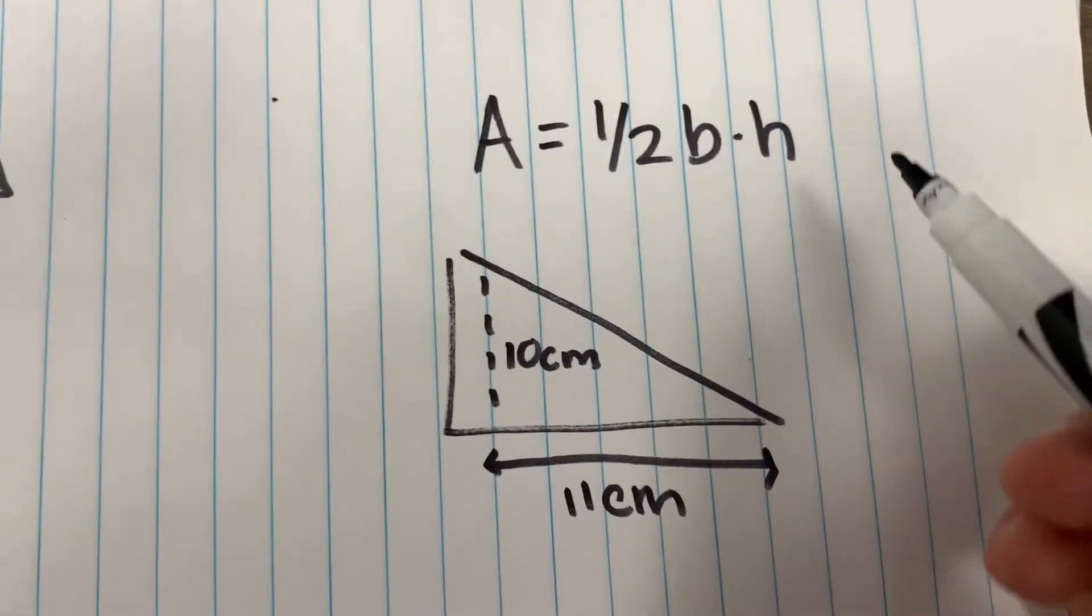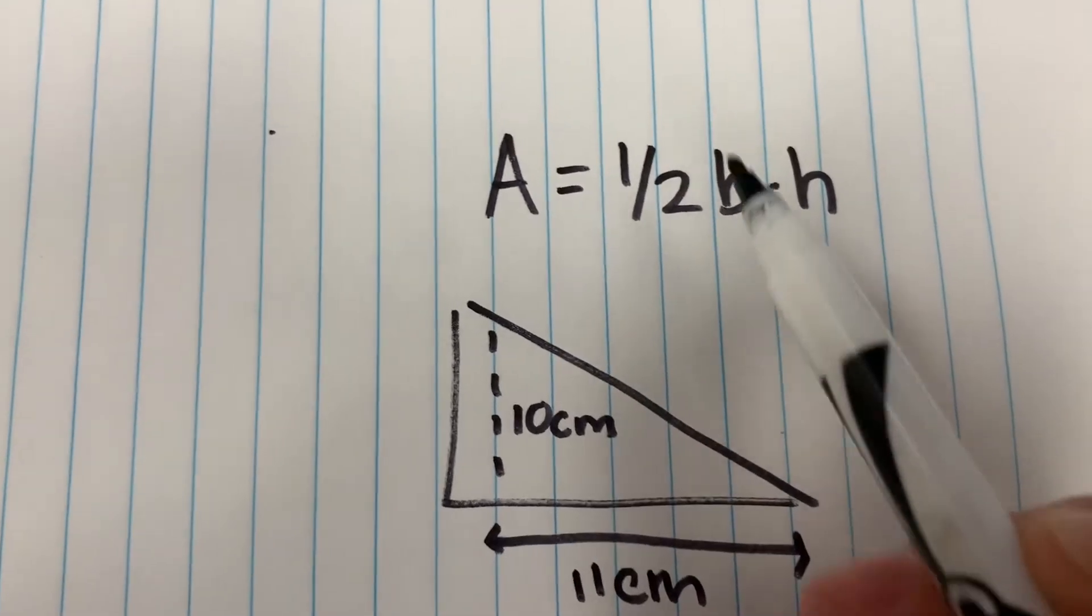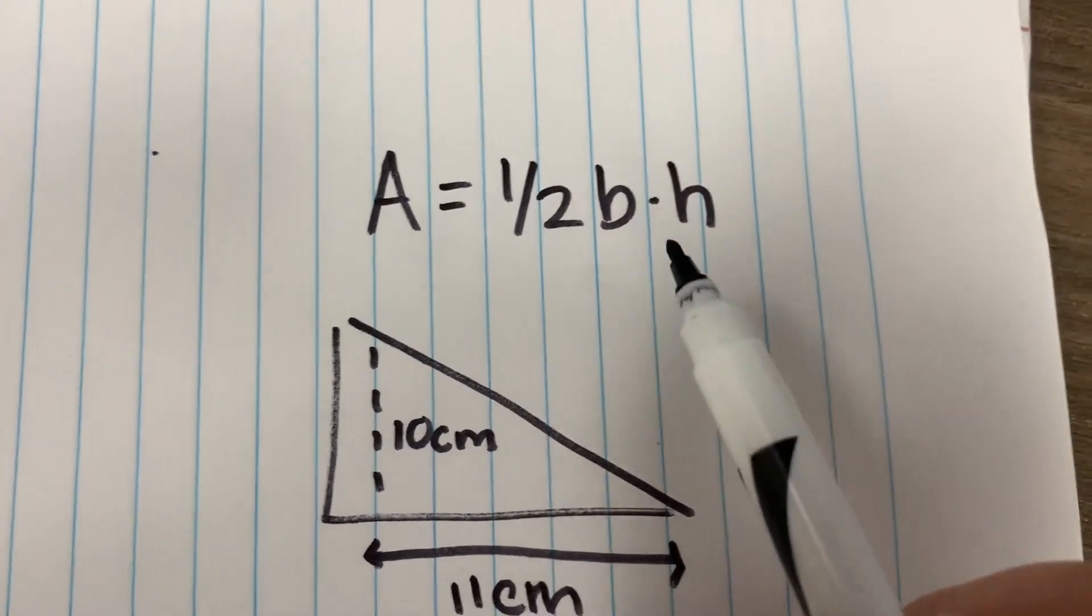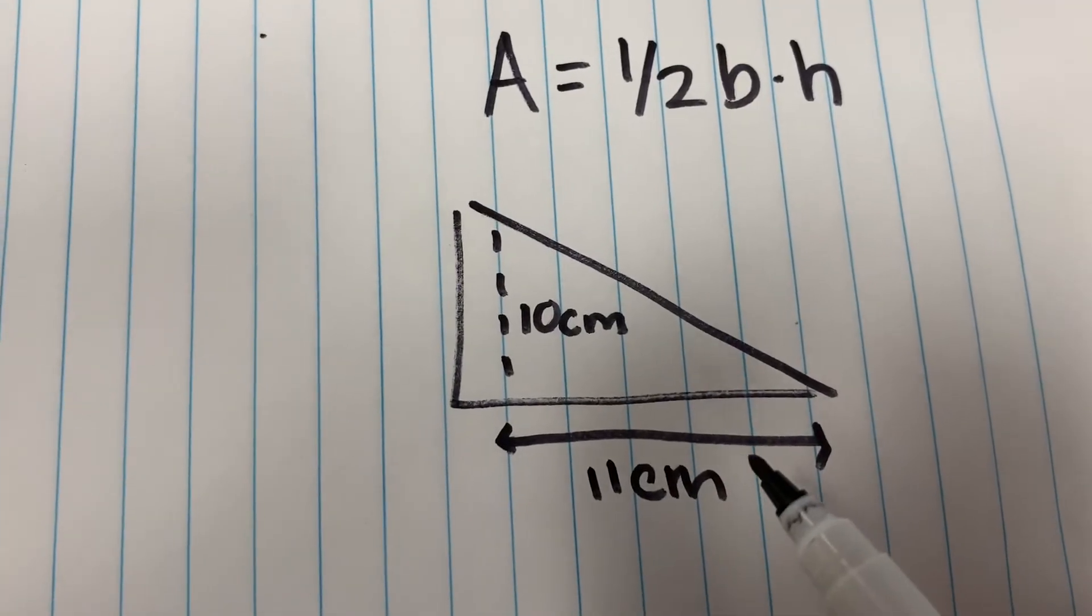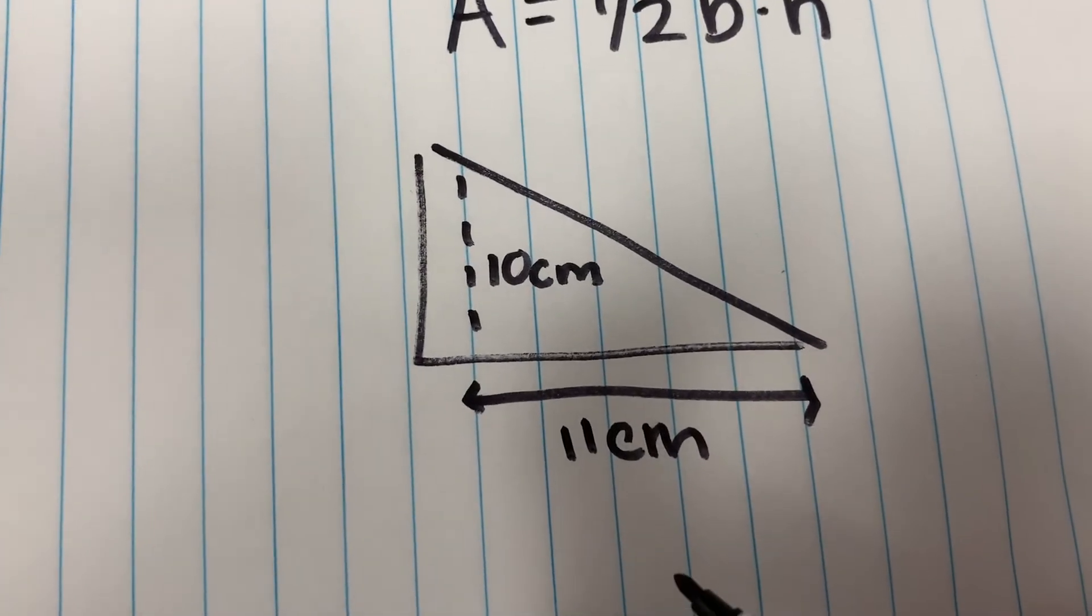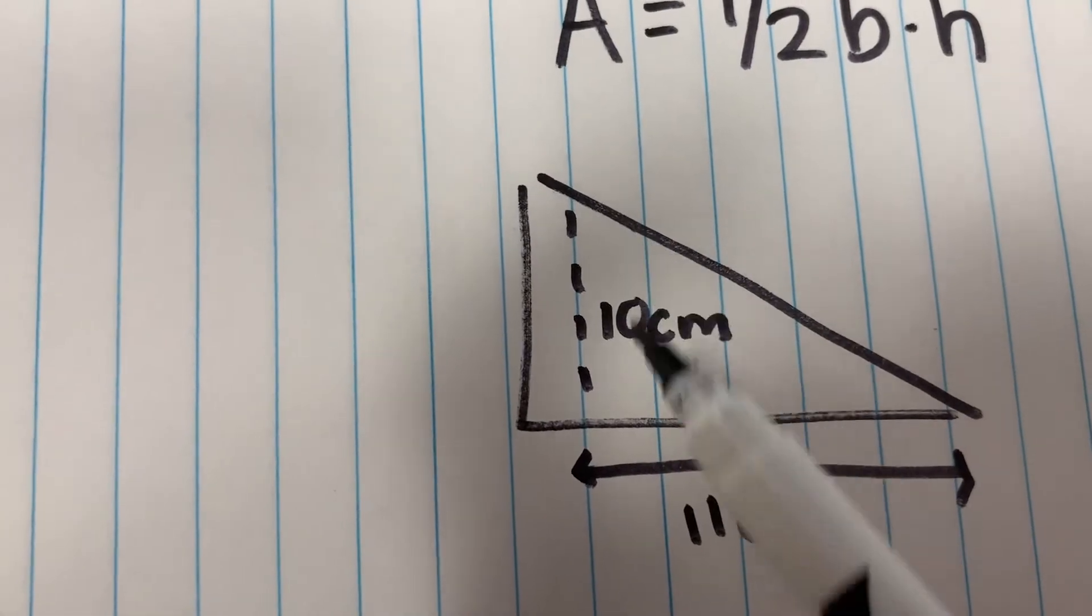For a triangle, the area is one-half base times the height. As you can see, the base here is 11 centimeters and the height here is 10 centimeters.